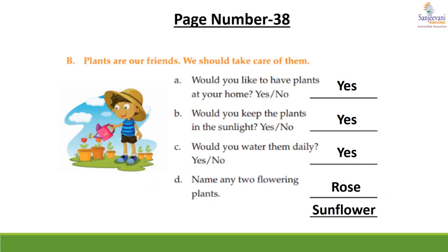Children, now comes to page number 38, B part — plants are our friends; we should take care of them. A: Would you like to have plants at your home? — Yes. B: Would you keep the plants in the sunlight? — Yes. C: Would you water them daily? — Yes. D: Name any two flowering plants — first is rose — R-O-S-E — second is sunflower — S-U-N-F-L-O-W-E-R.